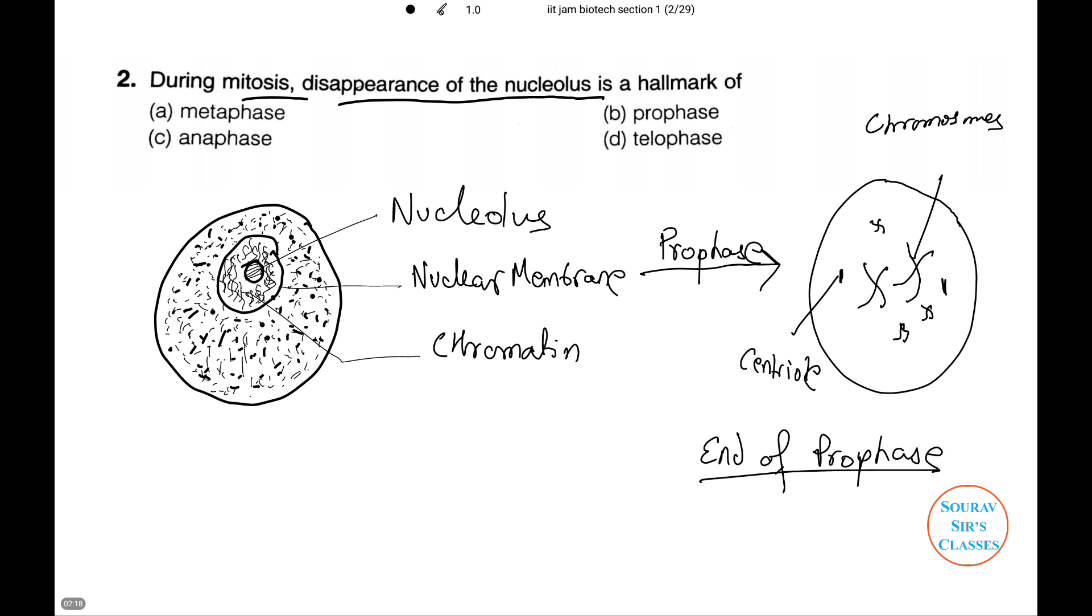The answer will be number B, prophase. Notice that after prophase, there does not exist any nucleolus in the adjoining cell.